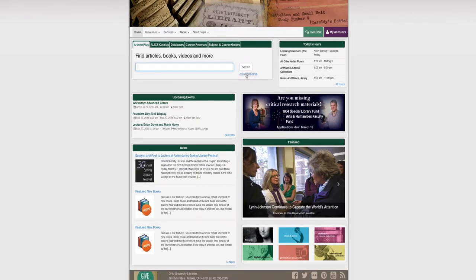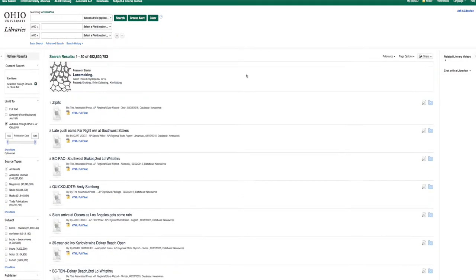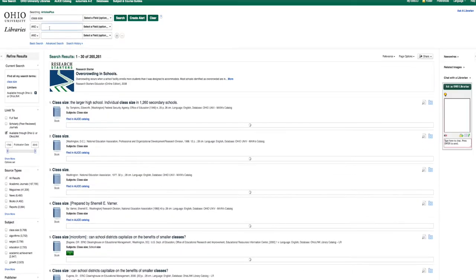Oftentimes, a database like Articles Plus will allow you to have multiple search boxes at the same time. So you can use one box for class size, one for student achievement, and one for the grade level.